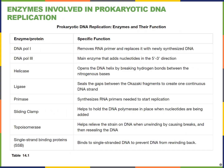A summary chart from our textbook lists the function of each enzyme. One enzyme not yet mentioned is the sliding clamp, which holds DNA polymerase III in place as it adds nucleotides to build the growing daughter strand of DNA.